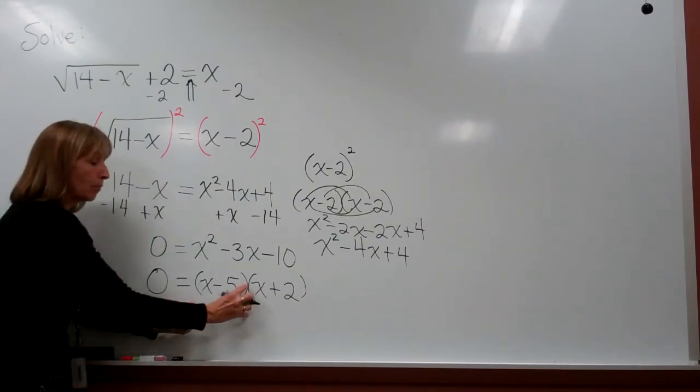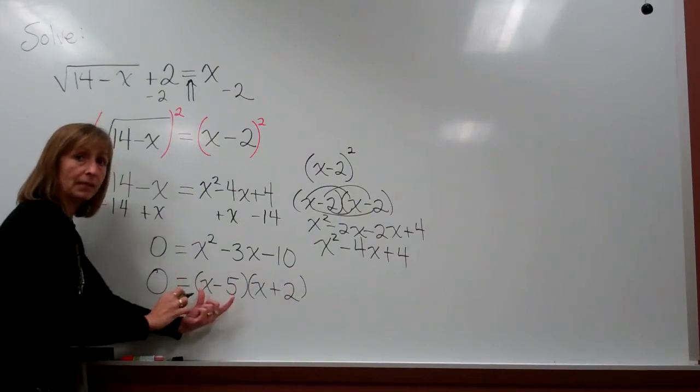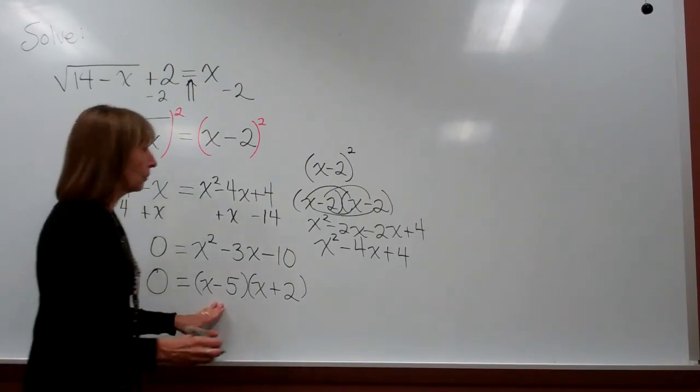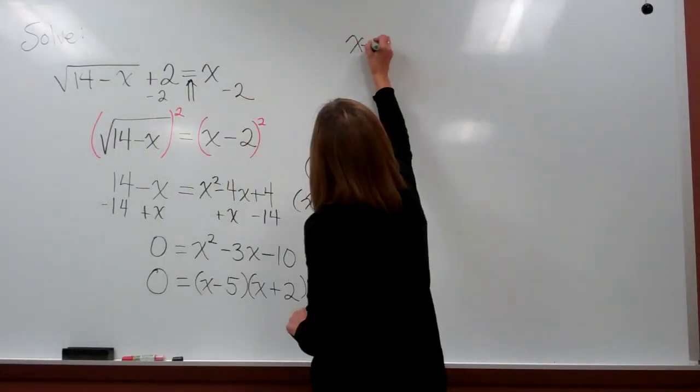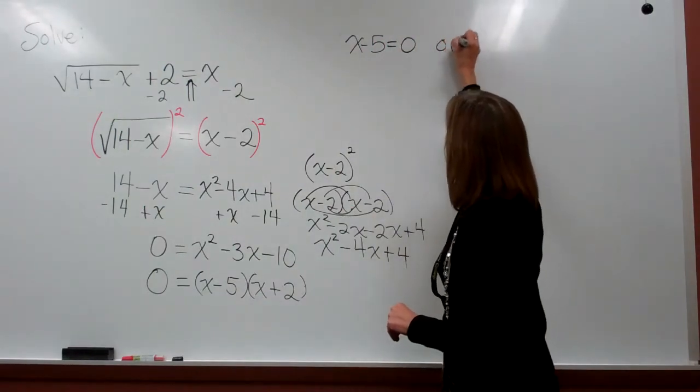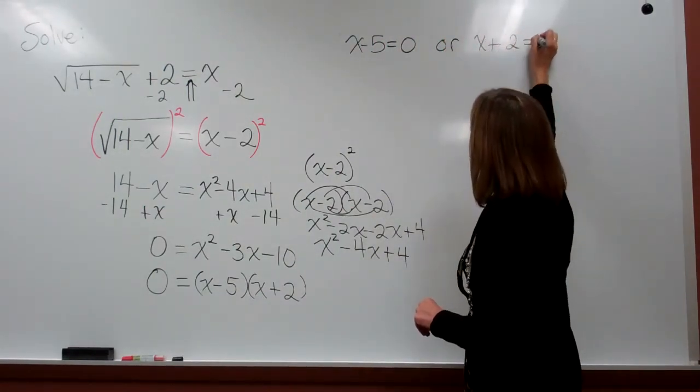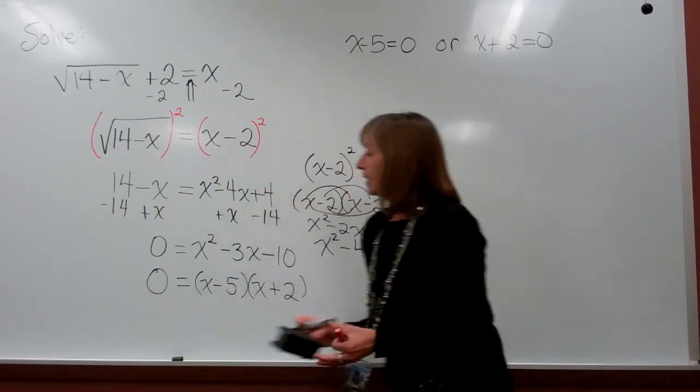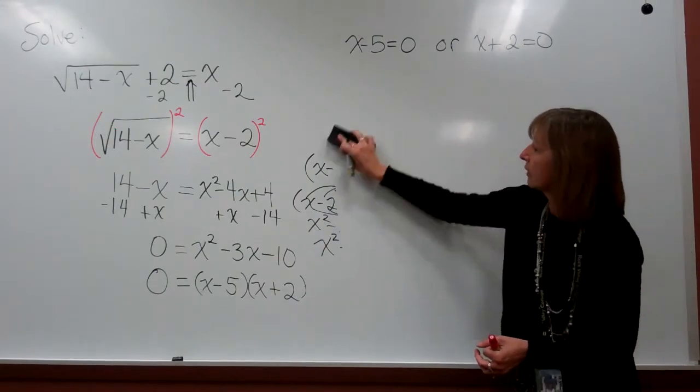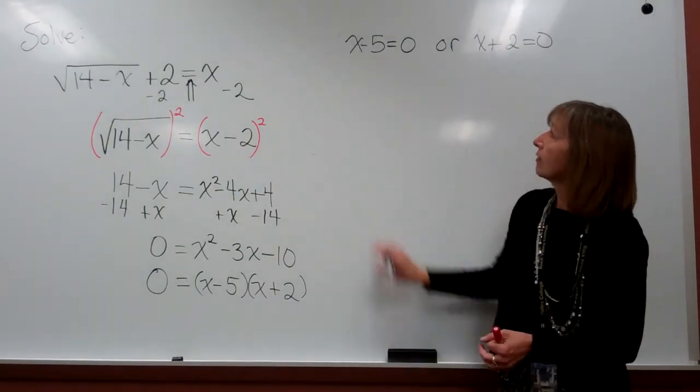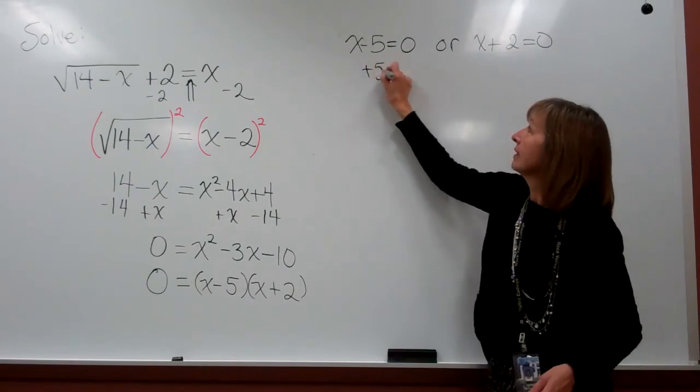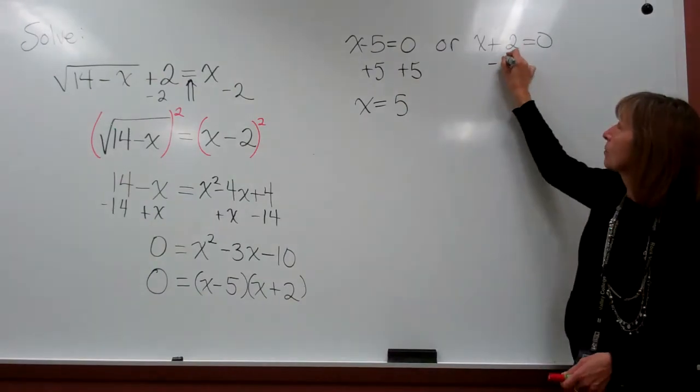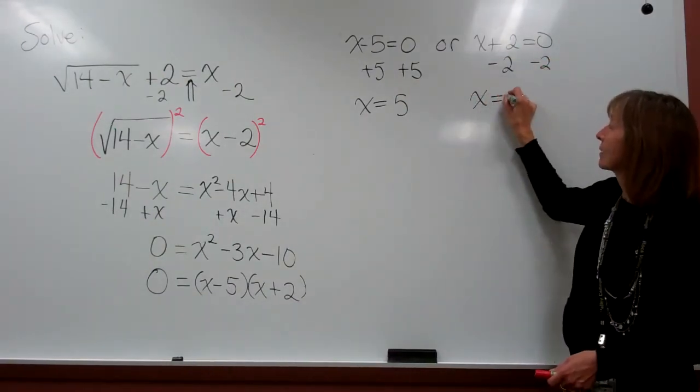When we have a multiplication of two quantities that come out to be a product of 0, we know that one of the factors has to be 0. So, either the x minus 5 has to be 0, or the x plus 2 has to be 0, in order for their product to come out 0. This allows us to solve the resulting linear equations. For this first one, we will add 5 to both sides to get x is equal to 5. And for the next one, we'll subtract 2 from both sides to get x is equal to negative 2. So, these are our possible solutions.